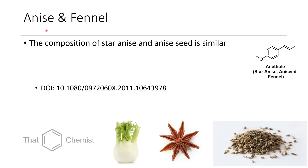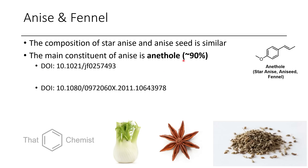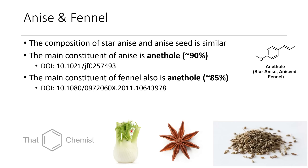The next compound is anise and fennel. The main constituent of these is anethole — so here you can see a bulb of fennel, here you can see a star anise, and here you can see anise seed. Anise seed and star anise have quite similar profiles in terms of what the essential oil contains. In the case of both of these, the relative amount of anethole is about 90%, which is quite high. In the case of fennel, it's only about 85%. To me, these have more of a licorice smell, and it's interesting that they share this motif.